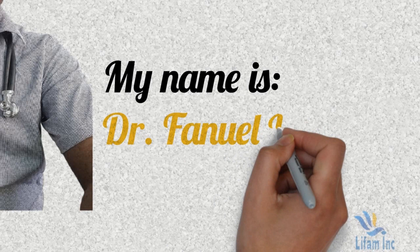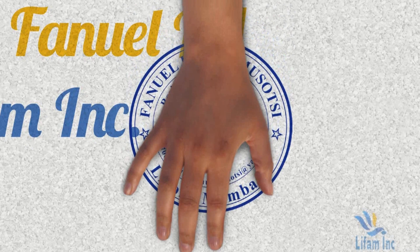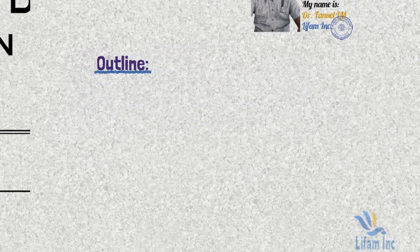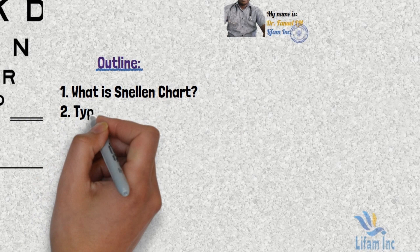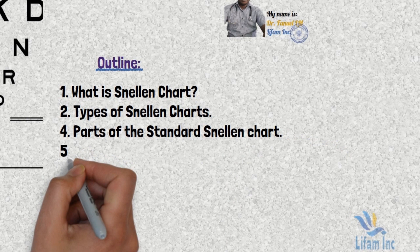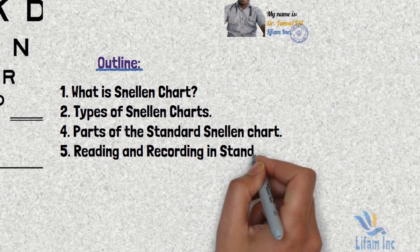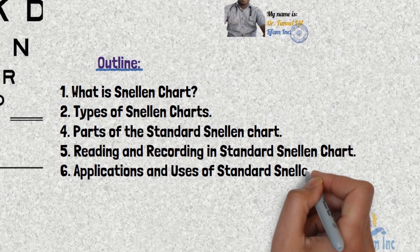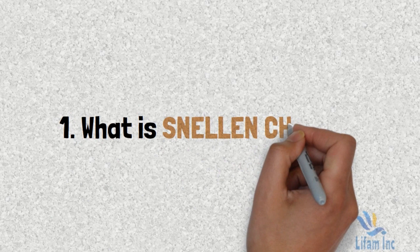Leave your comment and like the video. If you are not subscribed, subscribe. The outline of today's topic is: one, what is the Snellen chart; two, the types of Snellen chart; three, parts of the standard Snellen chart; four, readings and recording on the Snellen chart; and finally, applications and uses.